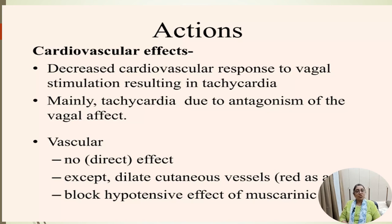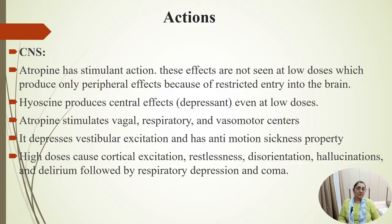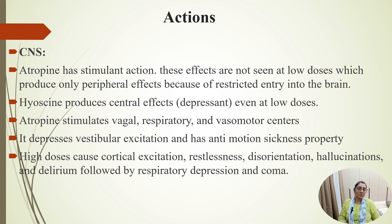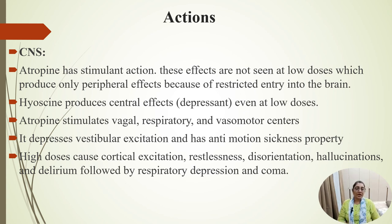Anticholinergic drugs block the hypotensive effect of muscarinic agonists. CNS actions of atropine are stimulant in nature, but these effects are not seen at low doses — only peripheral effects are seen at lower doses because the drug is restricted from entering the brain. Hyoscine, however, produces central effects even at lower doses.